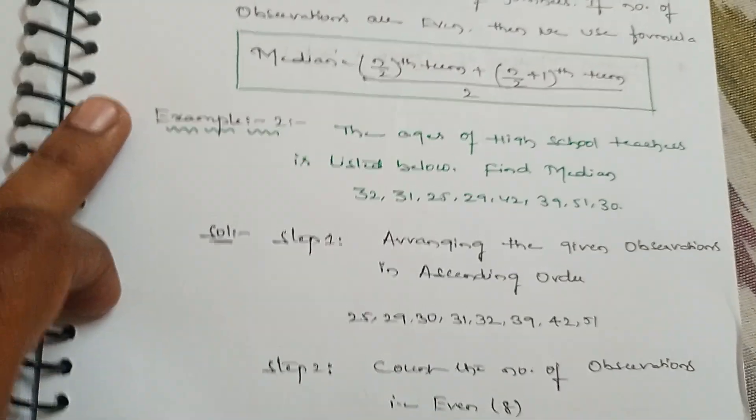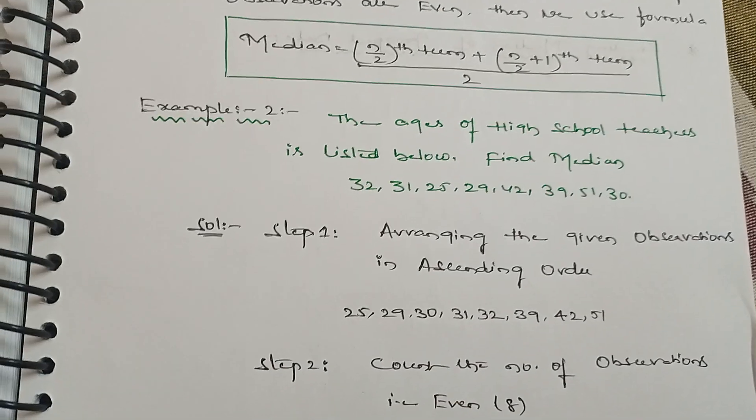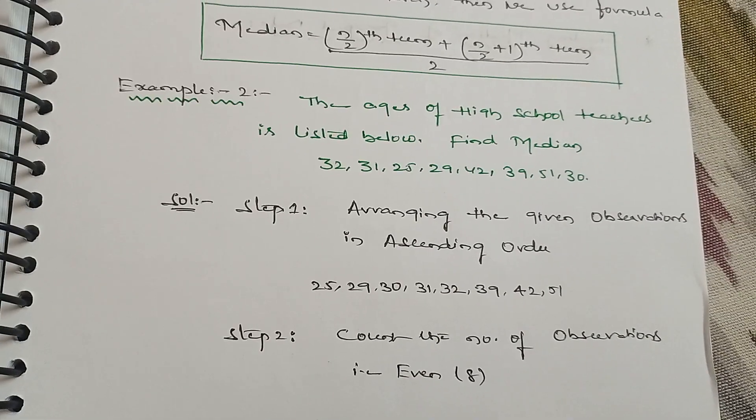Example: The ages of high school teachers are listed below. Find the median. 32, 31, 25, 29, 42, 39, 51, 30.